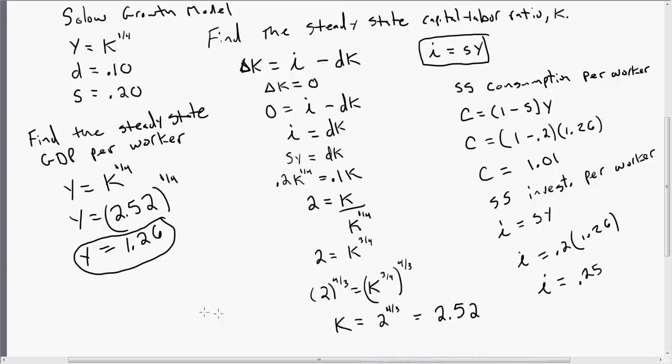One thing you'll notice here, that this is a closed economy, where GDP per worker equals consumption per worker plus investment per worker. So if we just add up our results from C and I, 1.01 plus 0.25, we get Y equals 1.26, which we found already over here. So this is just a check on our math.